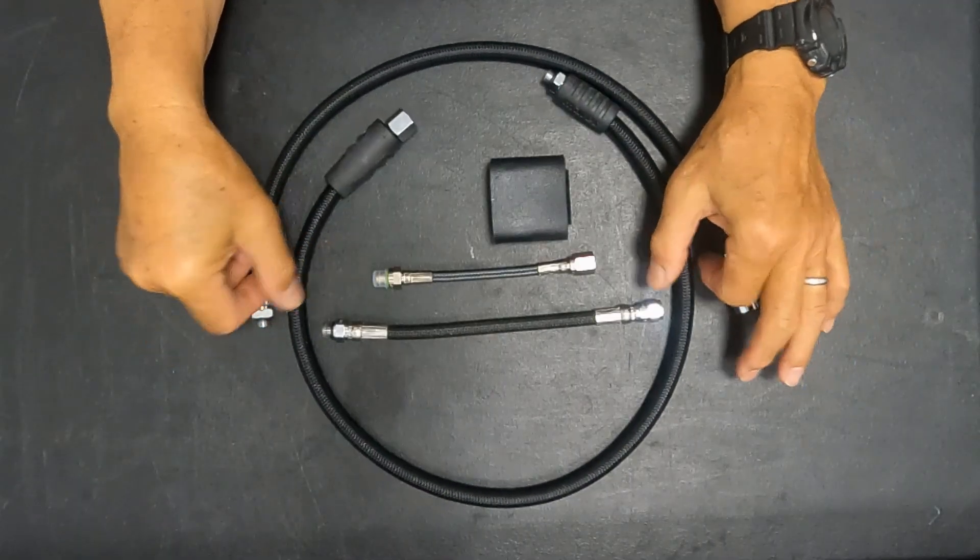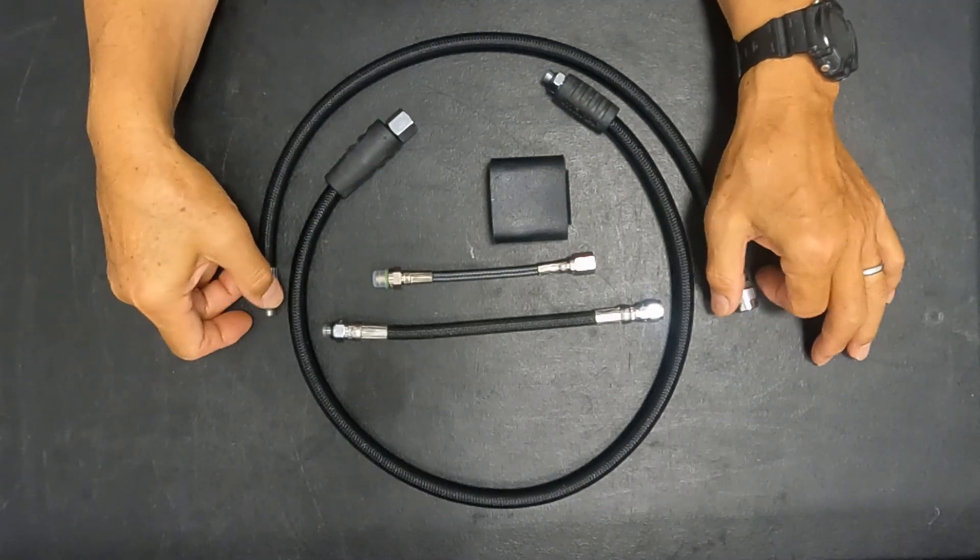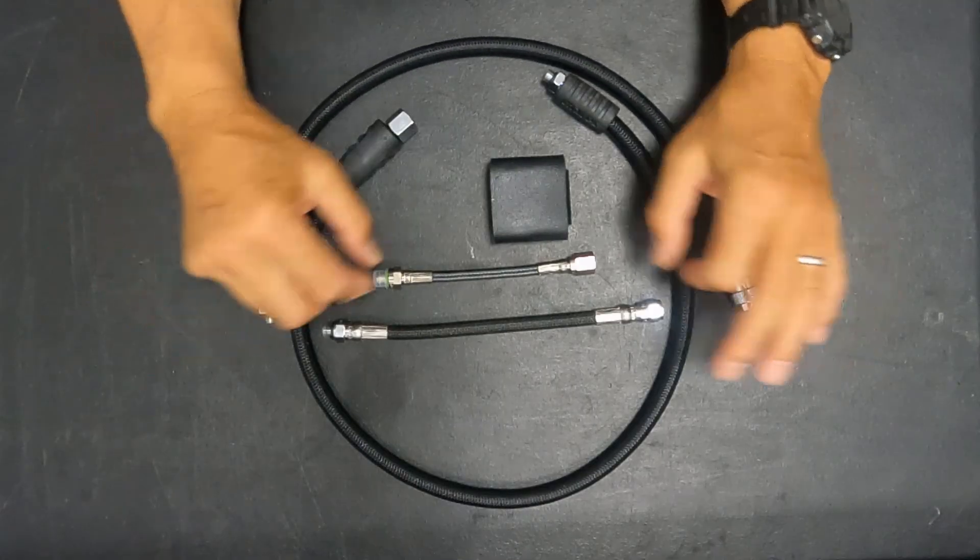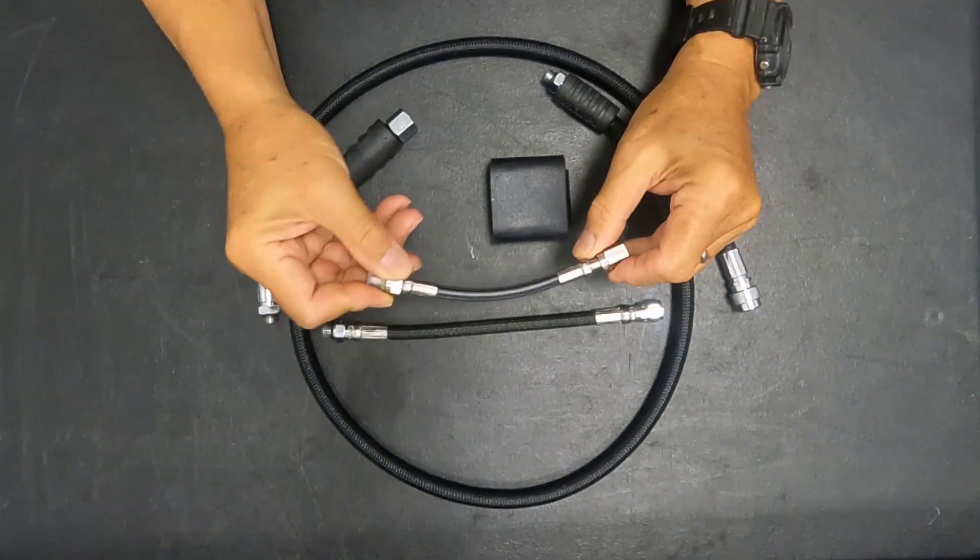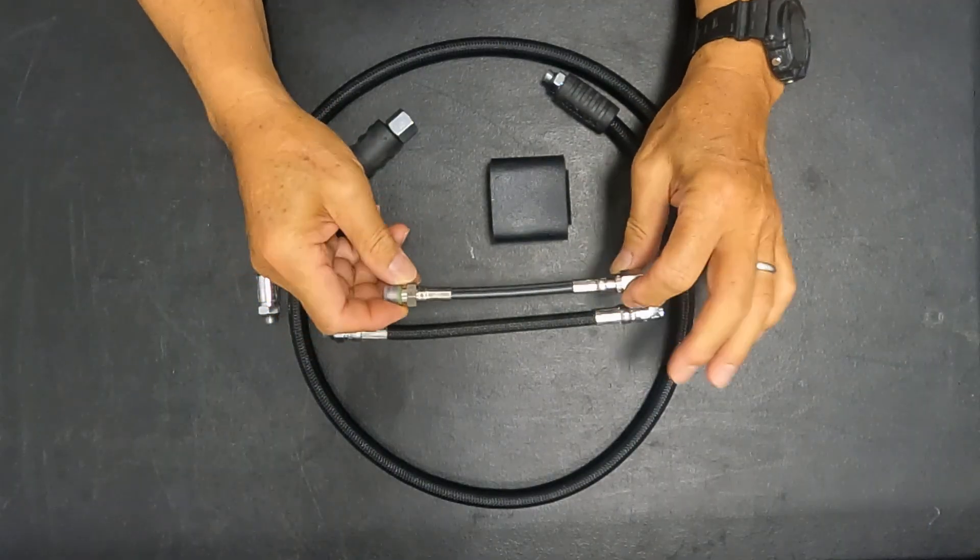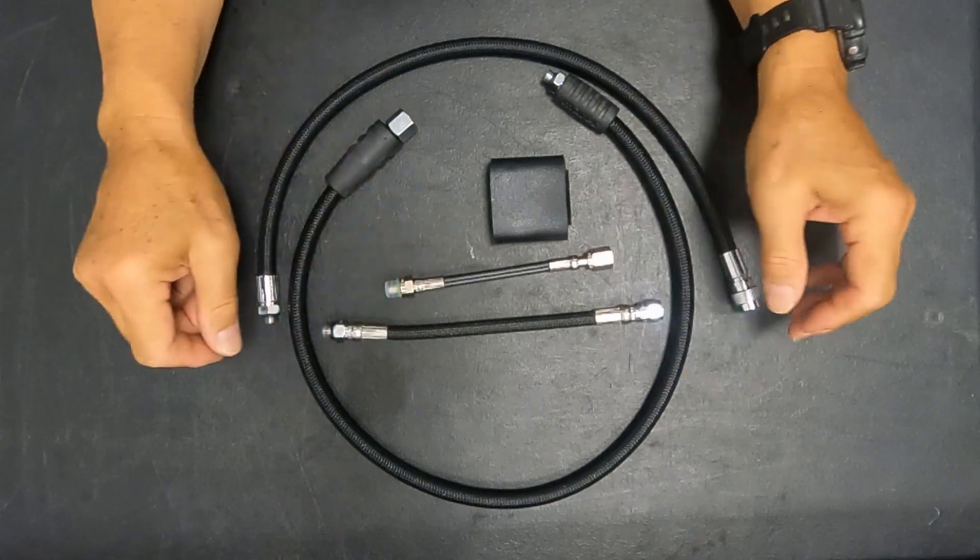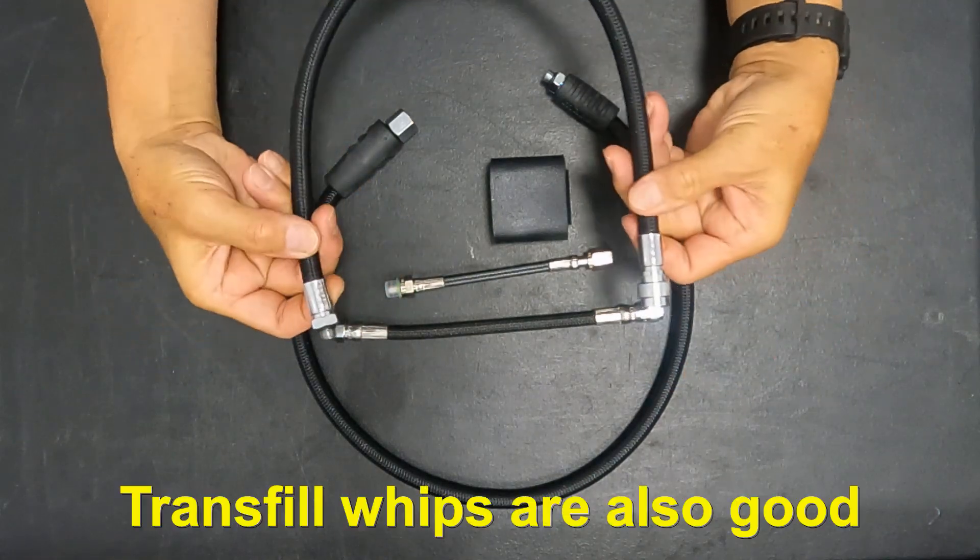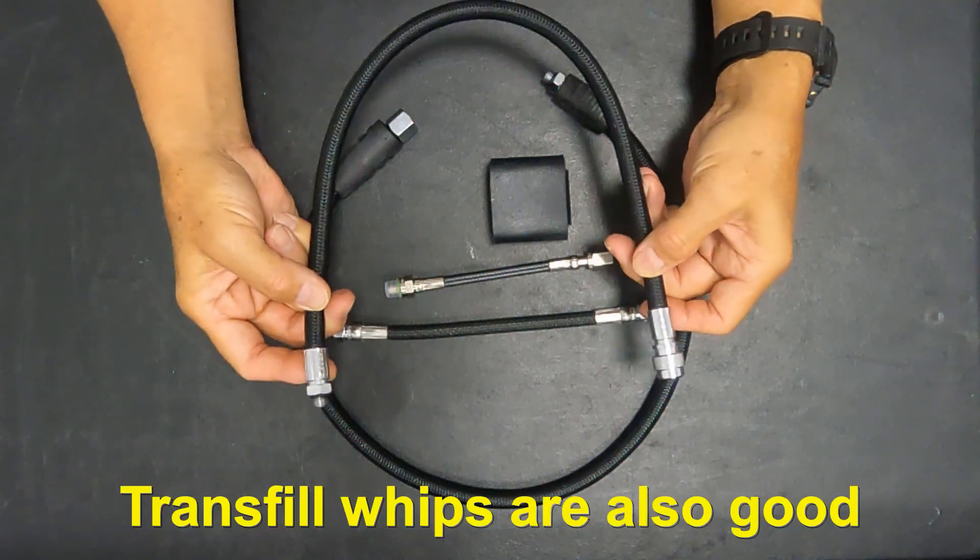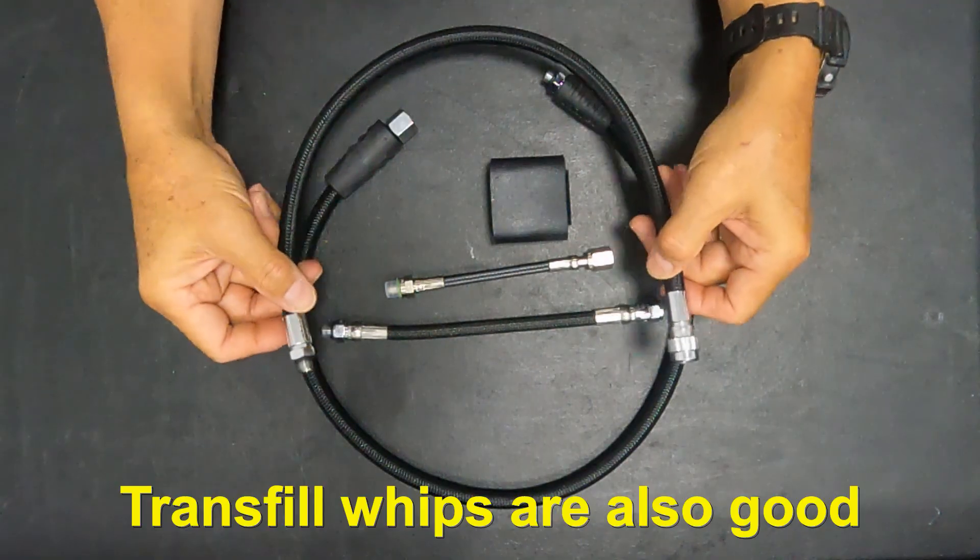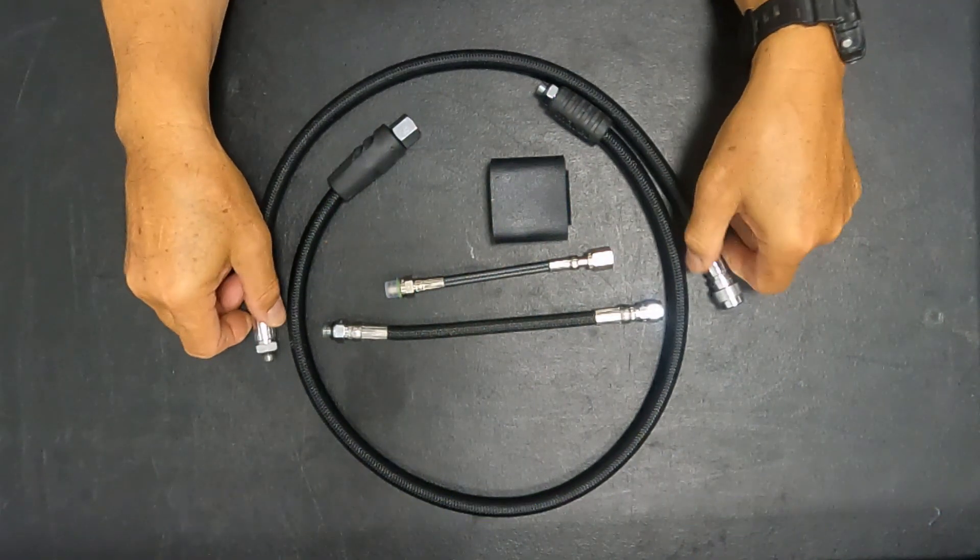So in summary, two good applications for braided hoses are for decompression or side mount gauges. Very good application for them. And also for people who like to have a little bit of color in their gear with the inflator hose. So that's also a good application.